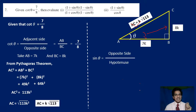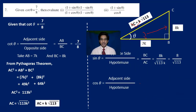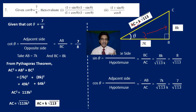Let us find the value of sin theta first. Sin is opposite side by hypotenuse, which is BC by AC. BC is 8K and AC is square root of 113 times K. K and K cancel, giving sin theta equals 8 by square root of 113. Now let us find the value of cos theta. Cos is adjacent side by hypotenuse, so AB by AC equals 7K divided by square root of 113 times K. K cancels, giving cos theta equals 7 by square root of 113.